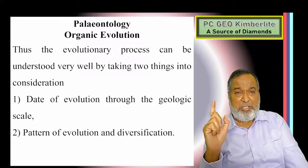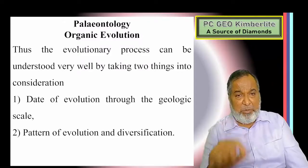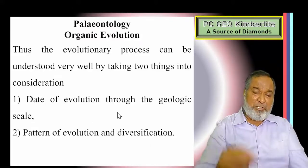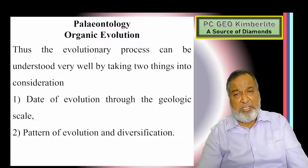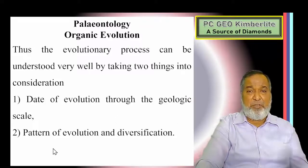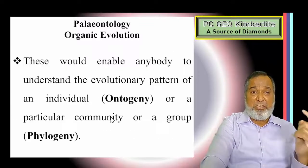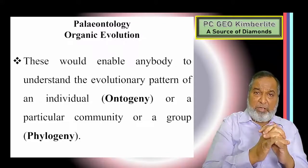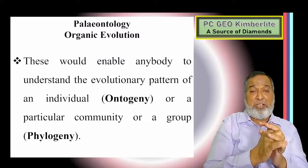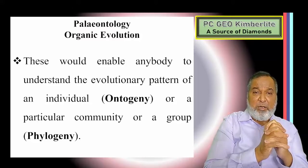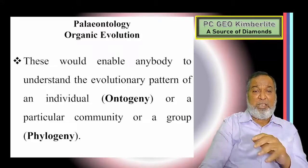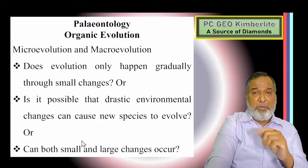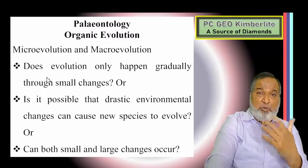The rate of evolution through the geological scale — so we are going to make out the dating, how many years back it has been dated — and similarly what is the pattern of evolution and where is the diversification. These two points are very essential for organic evolution. This would enable anybody to understand the evolutionary pattern of the individual, which is called ontogeny, or a particular community or group, which is called phylogeny. Remember for MCQs: ontogeny and phylogeny.